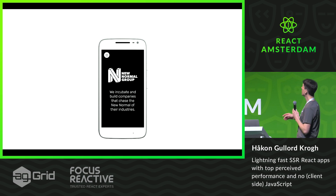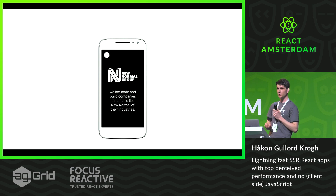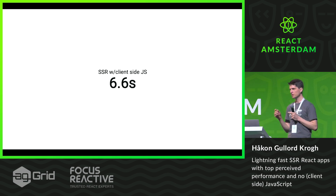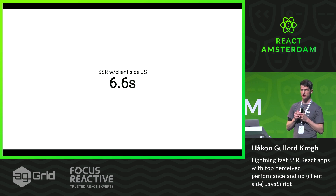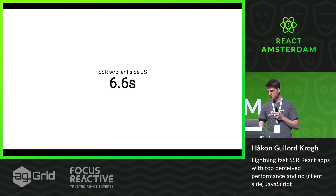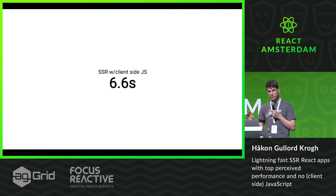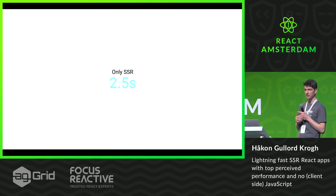Crystalize is part of a group called the New Normal Group, and they have a really nice, simple website. It's server-side rendered React because it uses Crystalize as a backend, so it needs to be dynamic. The only thing happening on the client side is a menu opening — I think we can do that in vanilla JS. The full-fledged Next.js version, booting everything from scratch on the client side, React and all of that: you're lying for 6.6 seconds. If you remove all JavaScript, the user only gets HTML and CSS, and it's only a 2.5-second lie. Not too bad.